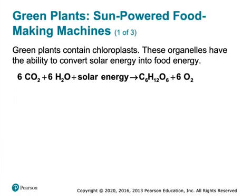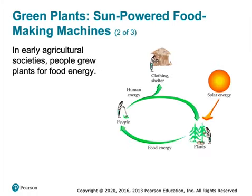As we talked about before, plants convert carbon dioxide and water with photons from the Sun — it doesn't have to be the Sun, you can do it indoors with a light — and they form glucose and many other molecules: proteins, alkaloids, and so on.